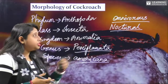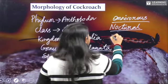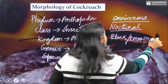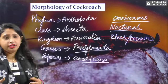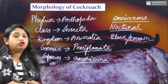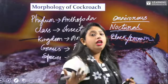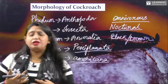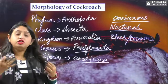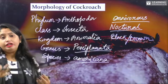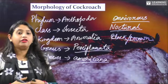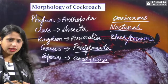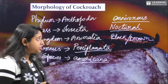Cockroaches are mostly black or brown in color. However, red, yellow, or green color cockroaches also exist — these are found in tropical regions, where you will find different varieties with different colors like red, green, and yellow.